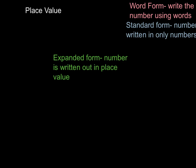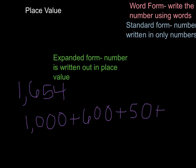The next vocabulary word is expanded form. Expanded form is a number that's written out in place value. So let's say we have 1,654. That's written out in standard form, because standard form, remember, is written only in numbers. Expanded form, we write it out in place value. So let me show you how that would look. 1,000 plus 600 plus 50 plus 4. So just like that would be expanded form.